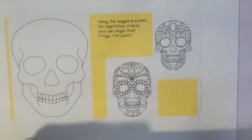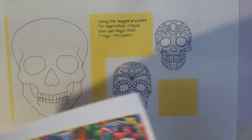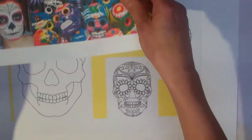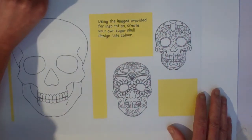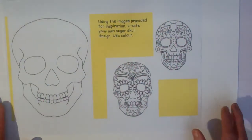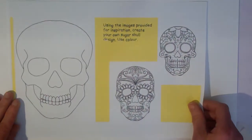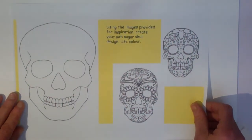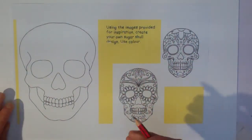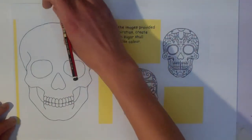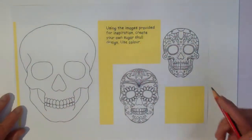I've put in the PowerPoint a template for you. If you're able to print that, by all means work straight onto the template — that's what I'm going to do today. If you can't print it, then just draw it freehand and copy it from the image so that you can get a starting point for your sugar skull.